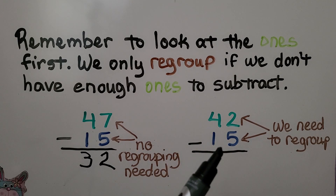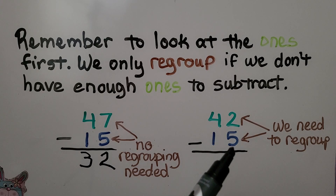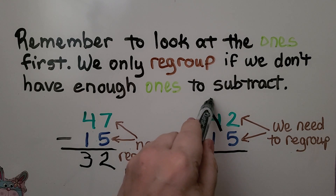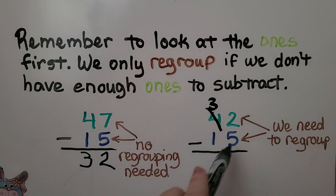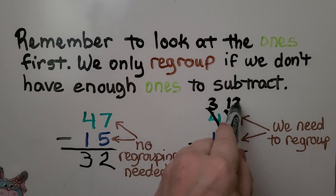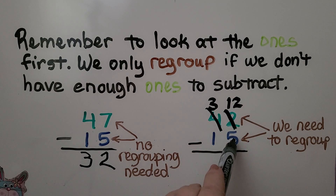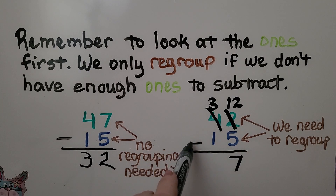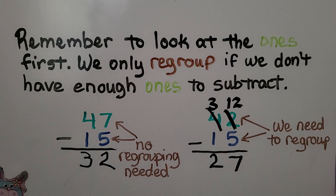Here we have 42 minus 15. We have two ones and we need to take five away, so we will need to regroup. We take a ten away from the four and it becomes a three. The two ones become twelve ones. Now we have twelve ones minus five ones, which is seven ones, and three tens minus one ten is two tens. It's equal to 27.